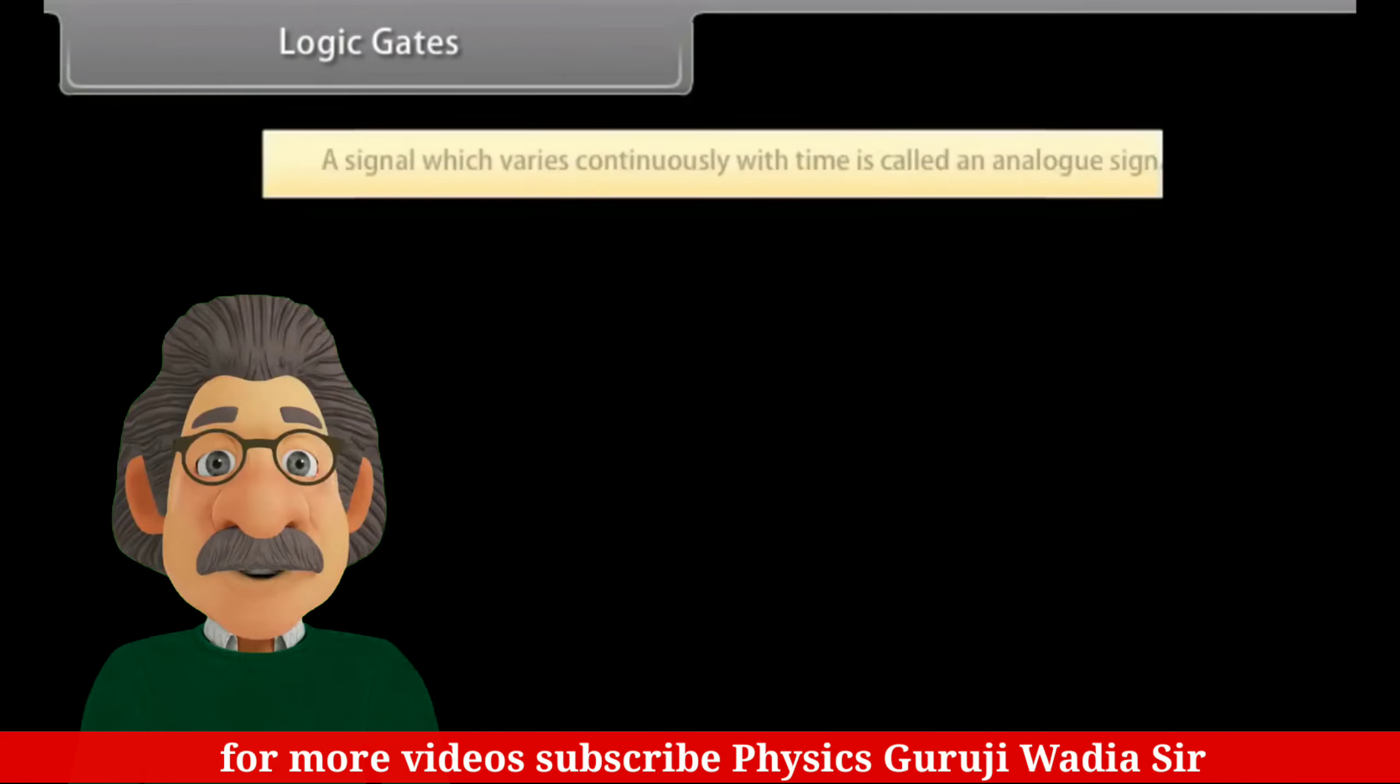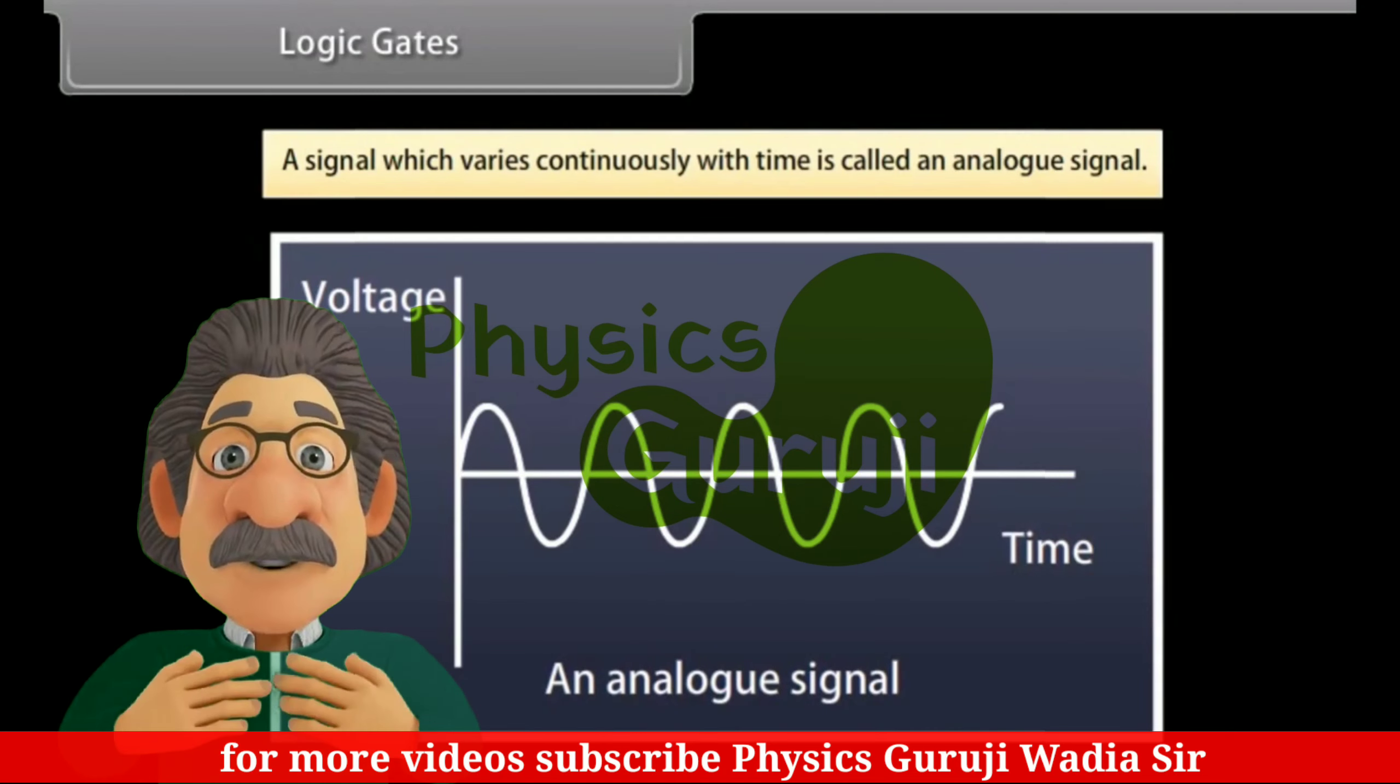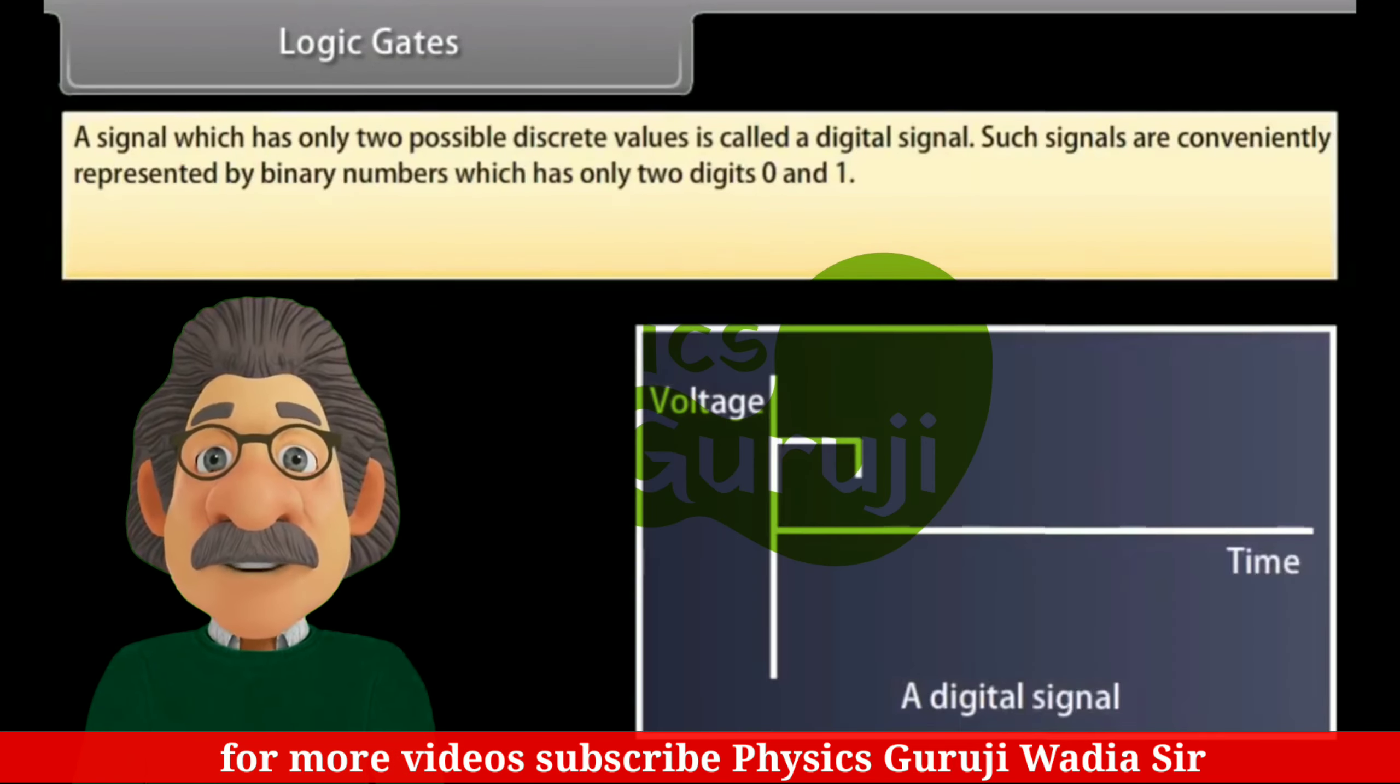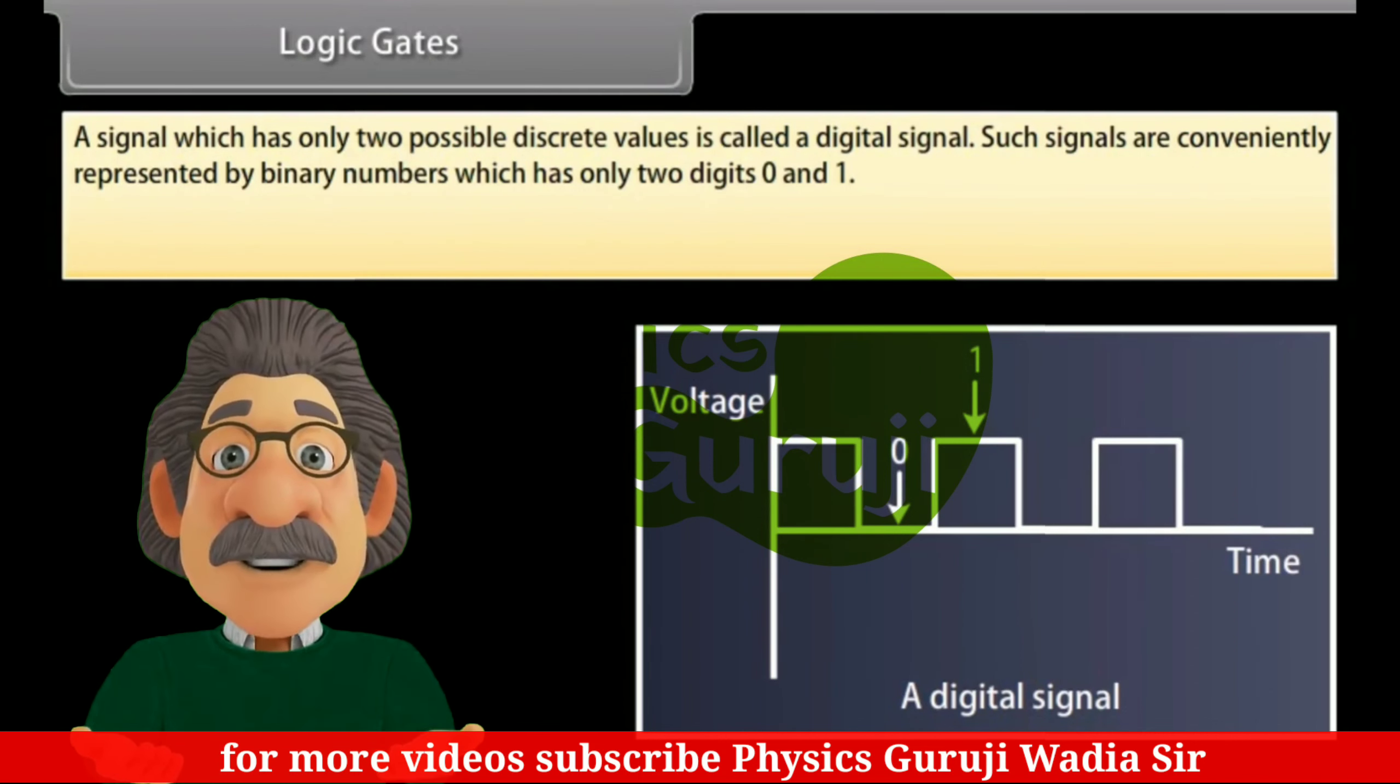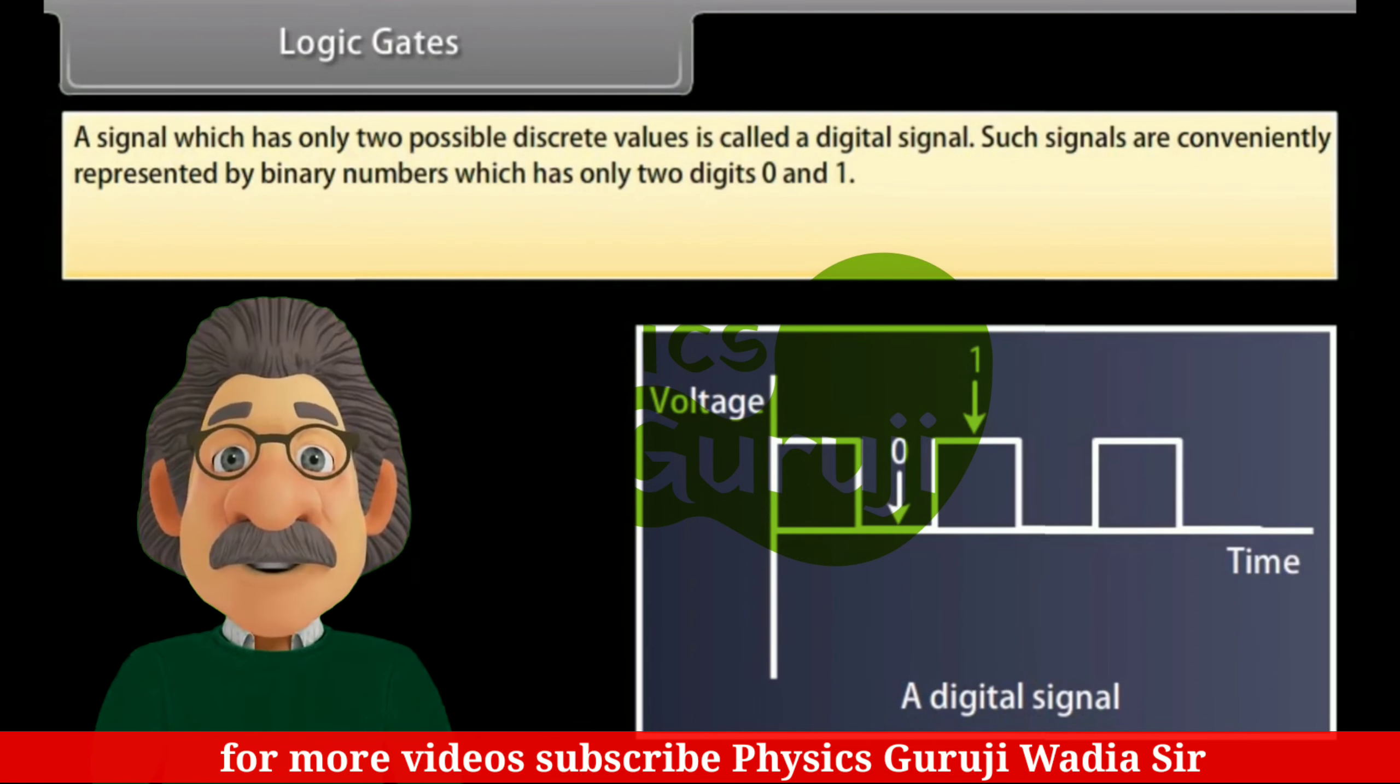Logic Gates. A signal which varies continuously with time is called an analog signal. A signal which has only two possible discrete values is called a digital signal. Such signals are conveniently represented by binary numbers which has only two digits, 0 and 1.